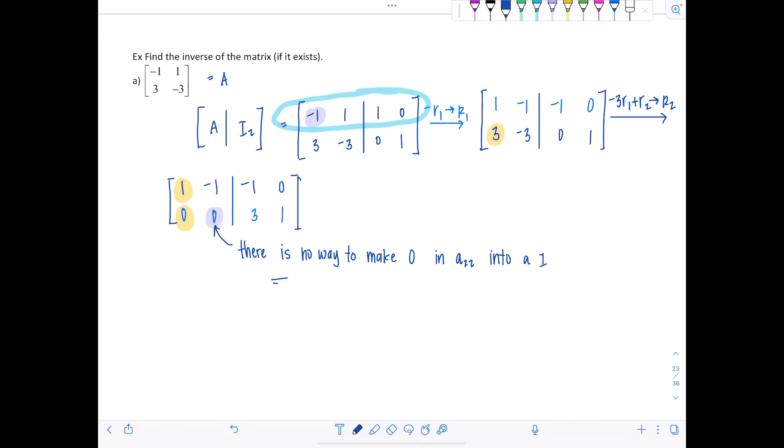So there's no way to make the zero in entry A22 into a one. So what does that mean for us? No inverse exists. This matrix is not invertible. And to keep practicing vocab, that means A is singular. All that means is non-invertible. I know it feels a little unsatisfactory when you can't find the inverse.